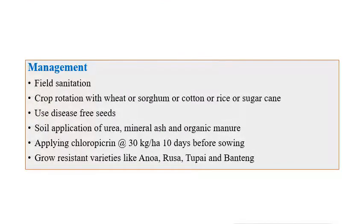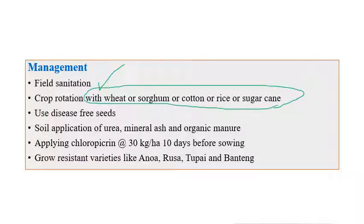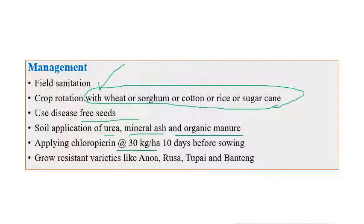For management of bacterial wilt, field sanitation and crop rotation with wheat, sorghum, cotton, rice, or sugarcane is recommended. Use of disease-free seeds and soil application of a minimum amount of urea along with mineral ash and organic manure is advised. Application of chloropicrin at 30 kg per hectare 10 days before sowing is also recommended. Resistant varieties include Anona, Rusa, Tupi, and Banting.